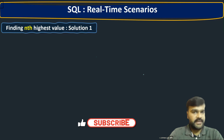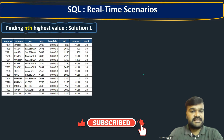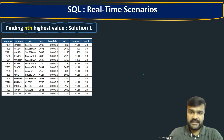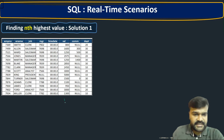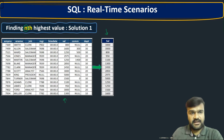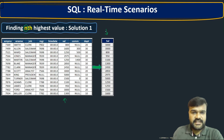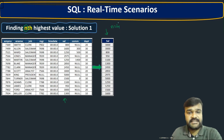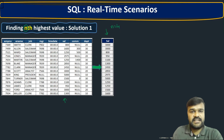For example, consider this emp table, which has eight columns and 14 records. We are going to work with the salary column. The question is: how do you find the nth highest or nth lowest salary? In this example, we are finding the nth highest salary and taking n as four, meaning we need the fourth highest salary and the corresponding employee details.